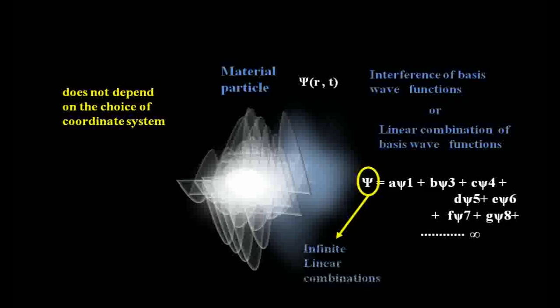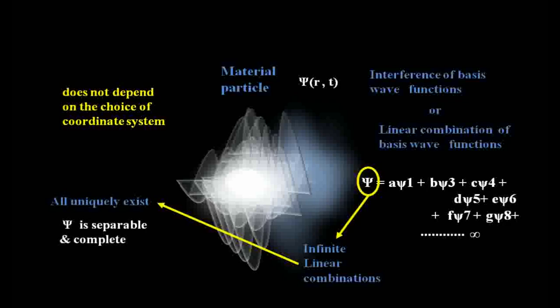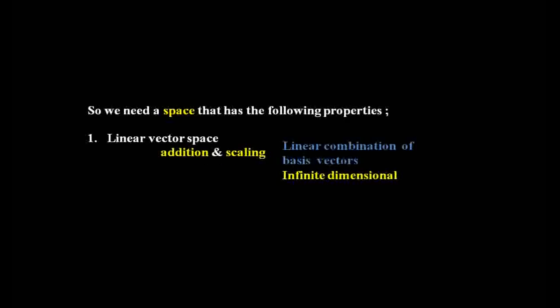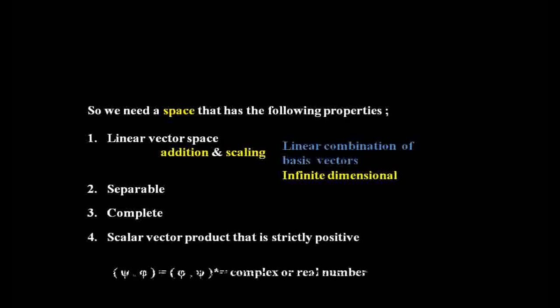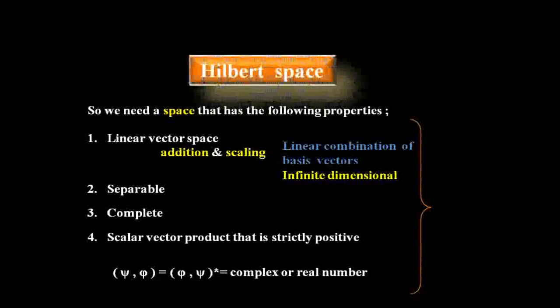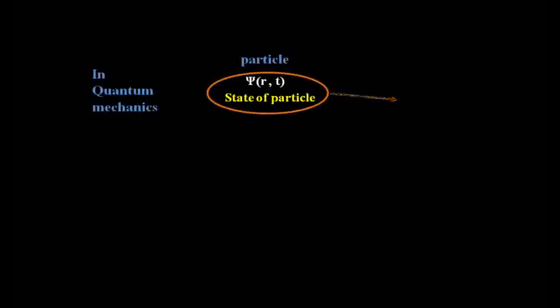Where the basis functions are infinite and give infinite linear combinations, all uniquely existing, they are separable and form a dense countable subset. So we need a space that has the following properties: linear and infinite-dimensional vector space, separable, complete, and with a strictly positive scalar inner product. This is known as Hilbert space. Therefore, in quantum physics, the state of a particle is an element or vector in Hilbert space.